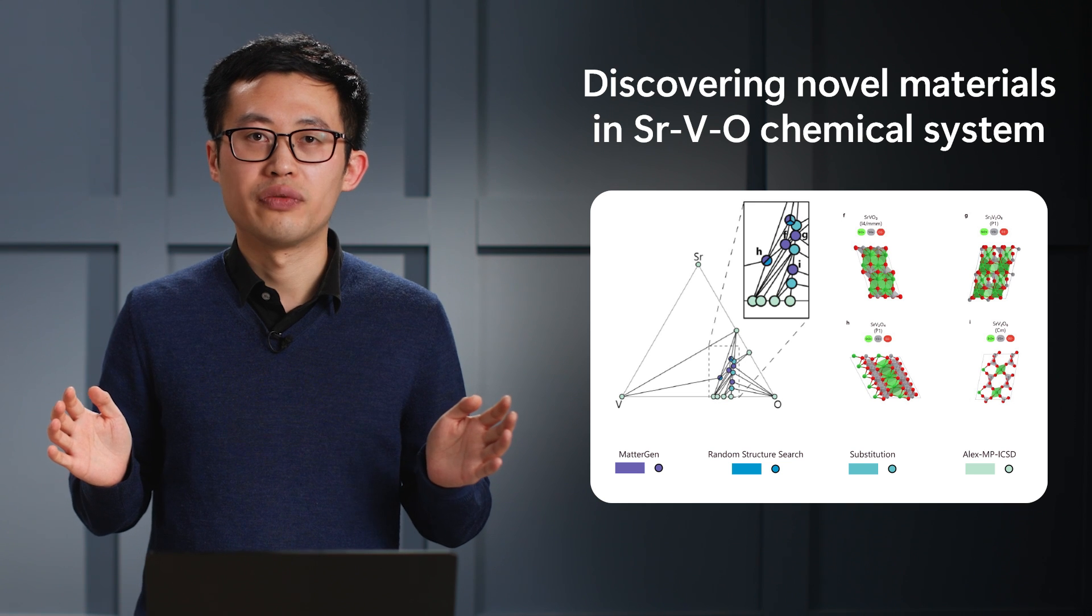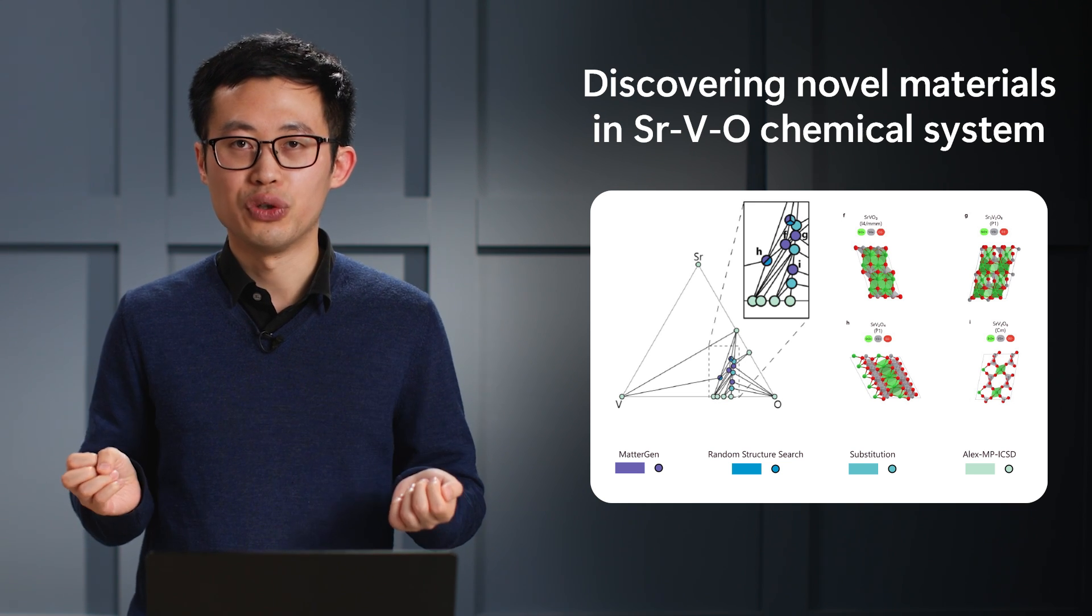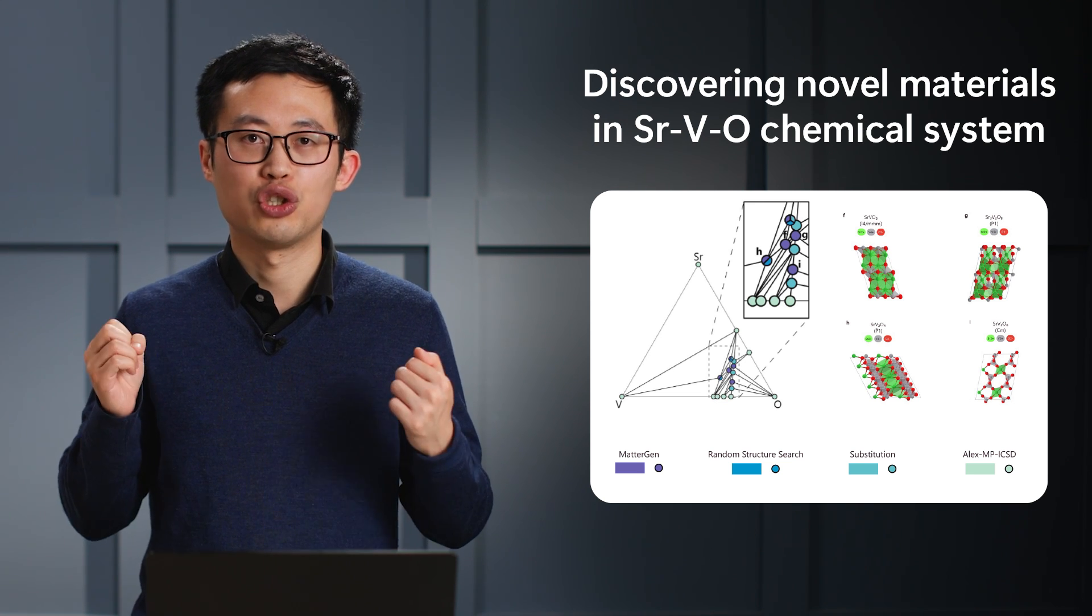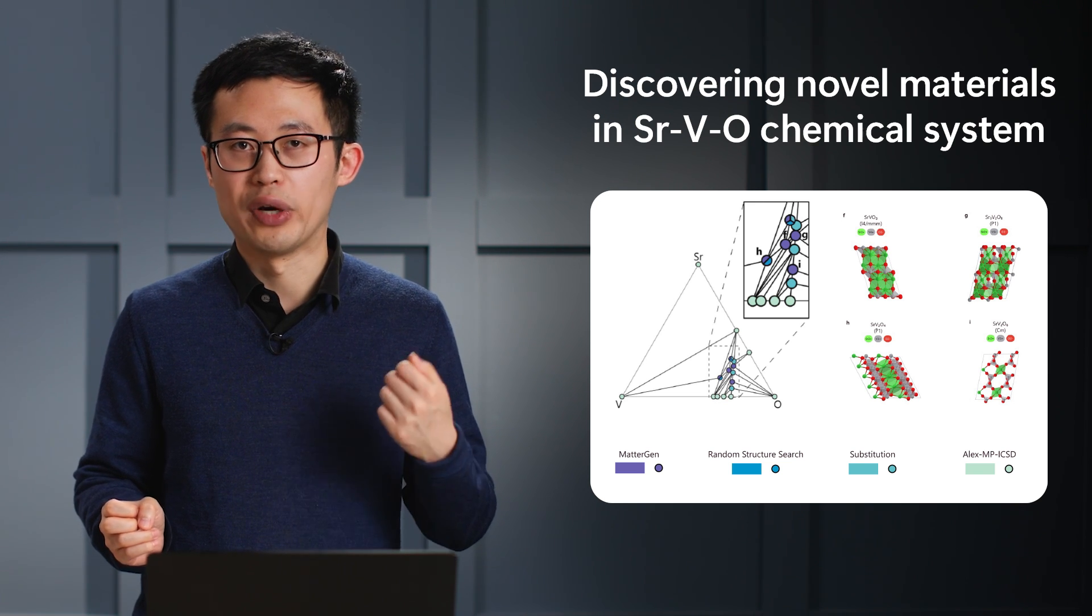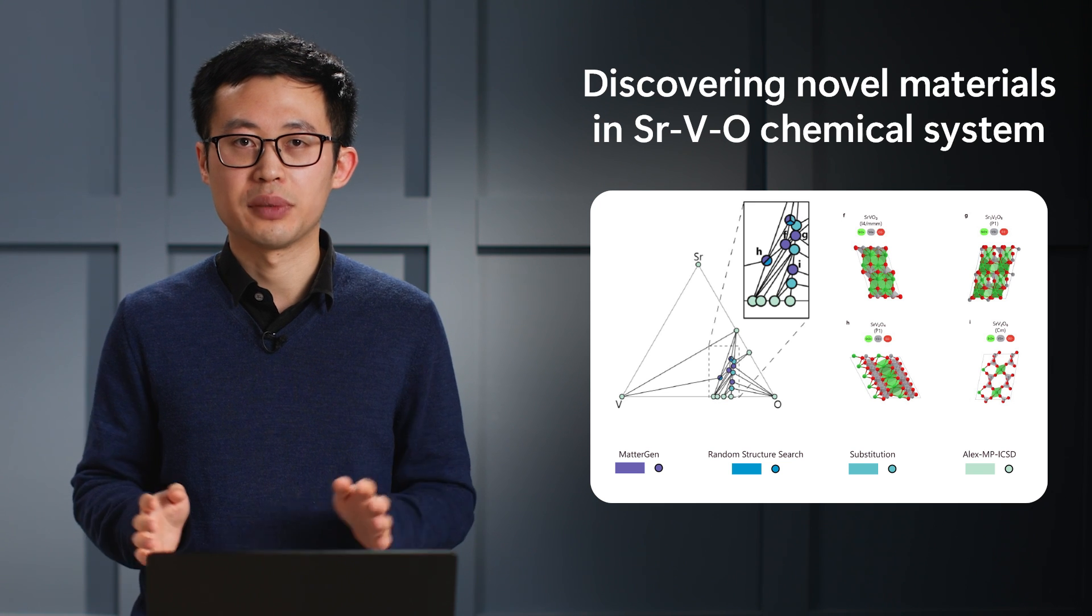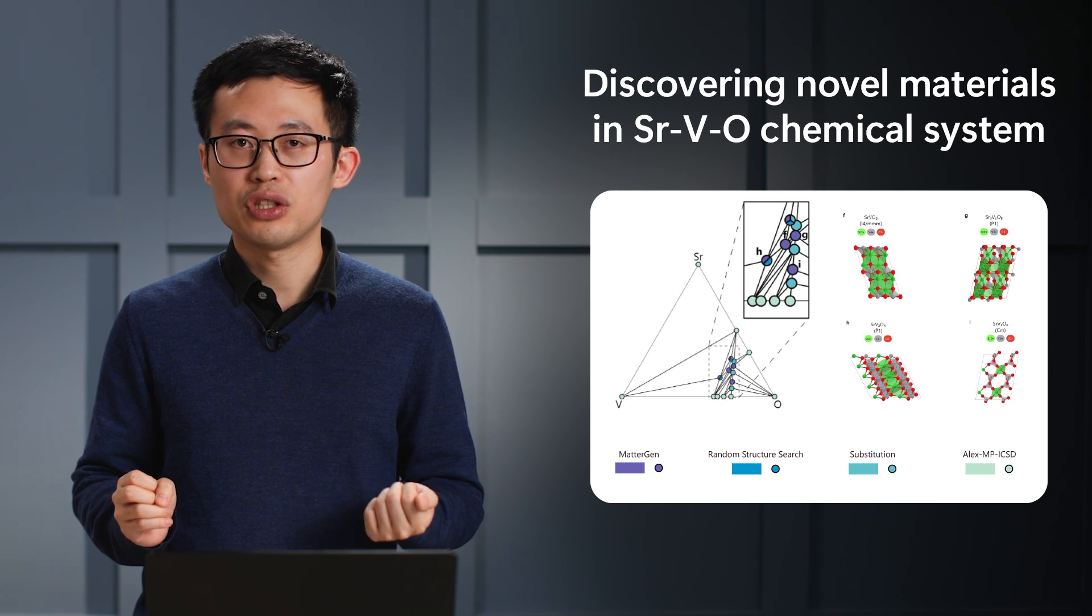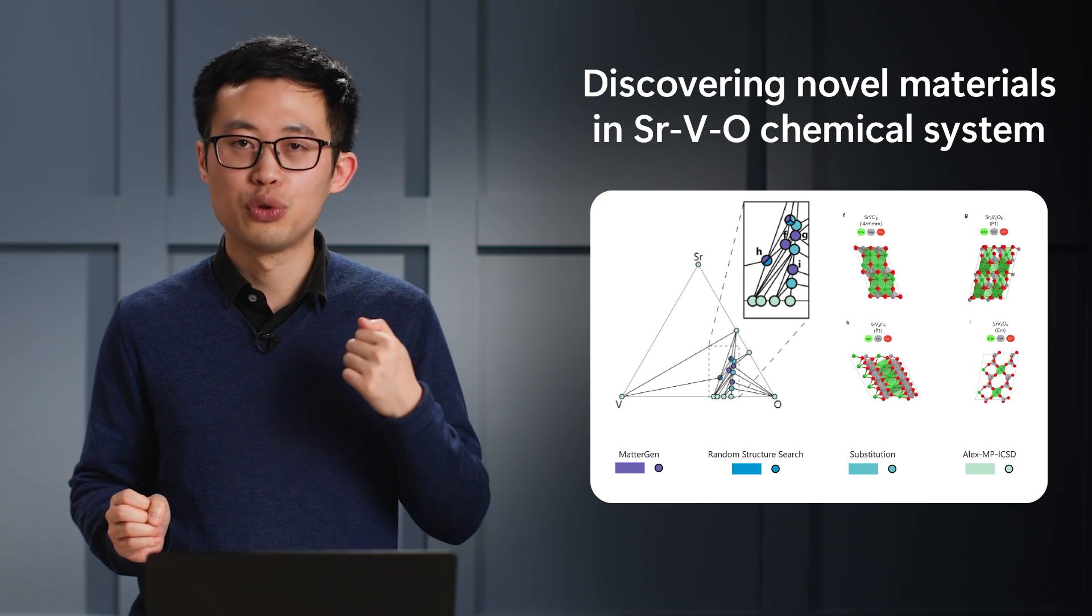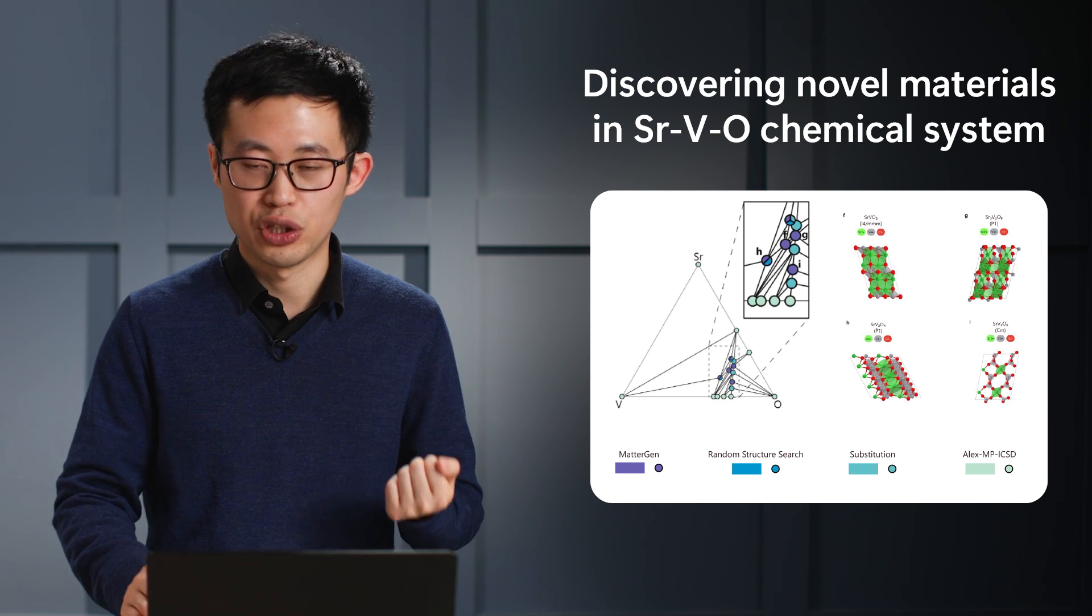Here is an example of how MetaGen generates novel materials in the strontium-vanadium-oxygen chemical system. It generates candidates with lower energy than two other competing methods, random structure search and substitution. The resulting structure looks very reasonable and is proven to be stable using computational methods.